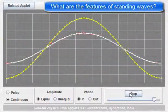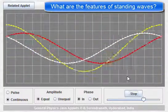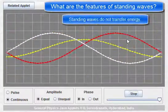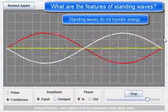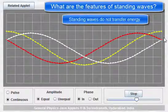So standing waves, firstly, do not transfer energy. The energy doesn't move to the left or to the right in the yellow wave, which is the sum of the two other waves.